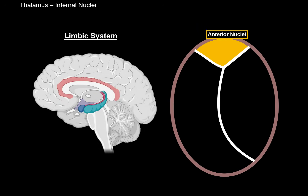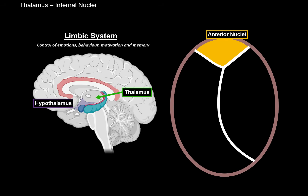The limbic structures involved with the anterior group of nuclei include the thalamus, hypothalamus, amygdala, hippocampus, cingulate gyrus, and the fornix. The mammillary body, part of the hypothalamus, sends fibers to the anterior thalamic nuclei. From there, axons go to the cingulate gyrus, which sends axons to the hippocampus, and from the hippocampus, fibers go through the fornix and finish the circuit back in the mammillary bodies.